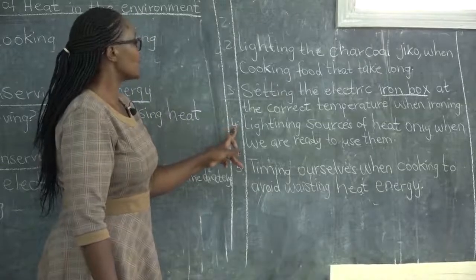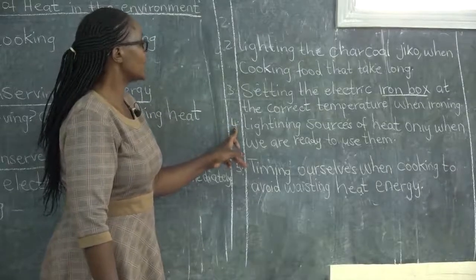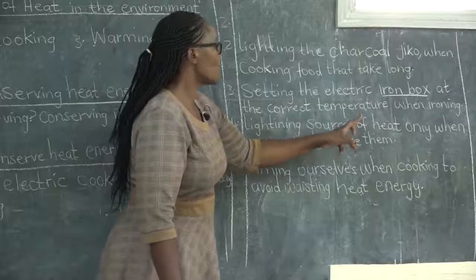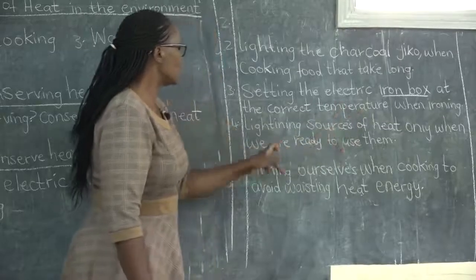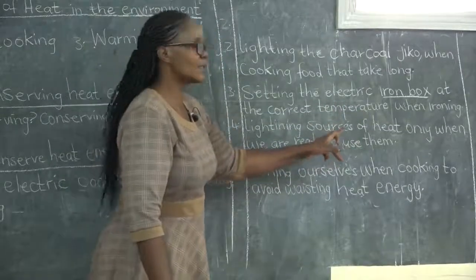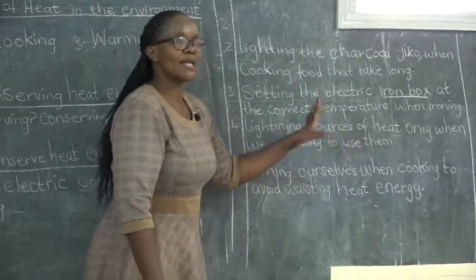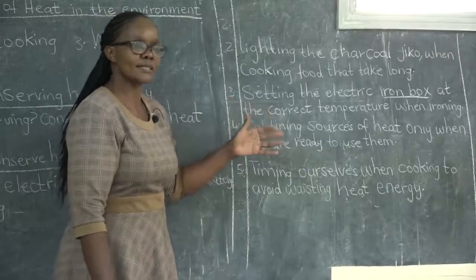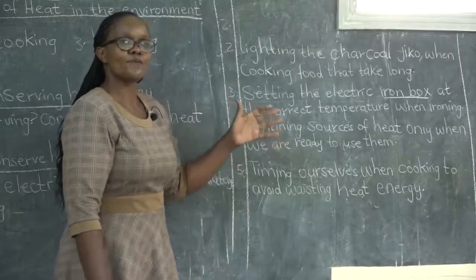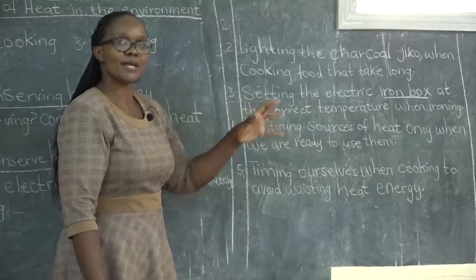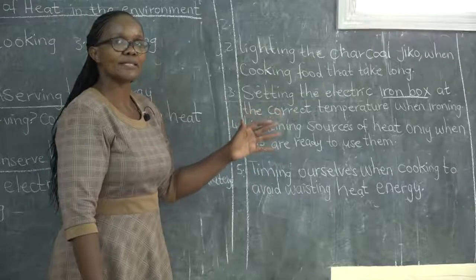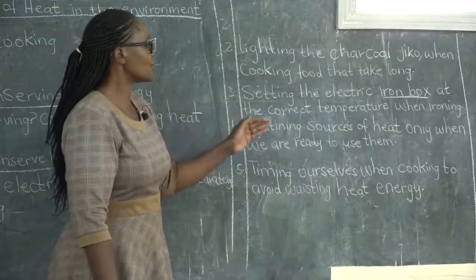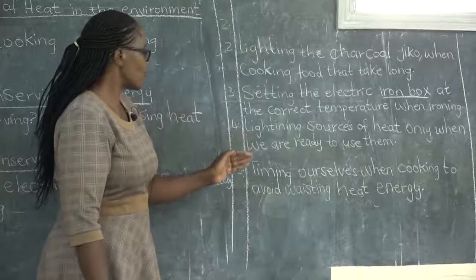Another way we can conserve heat energy is lighting the source of heat only when we are ready to use it. Remember, if you want to cook tea, you first prepare everything before lighting any source of heat which you intend to use.